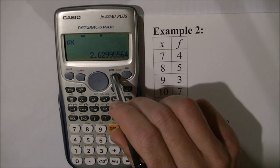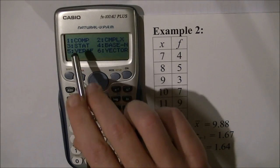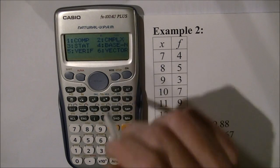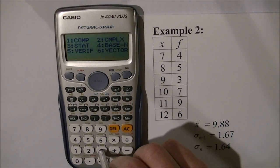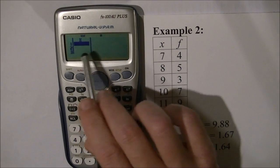First, I'll exit statistics mode to clear the memory. Press MODE, go to computation mode 1, then back to statistics mode, number 3, and press 1. Here's my table again.